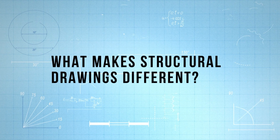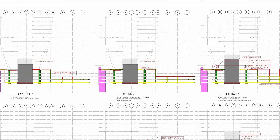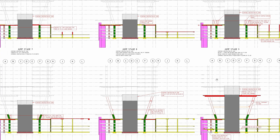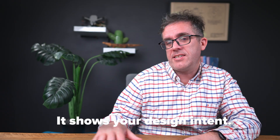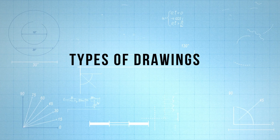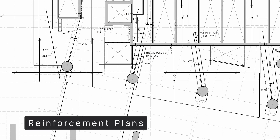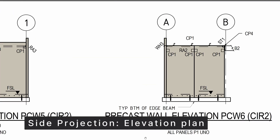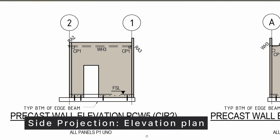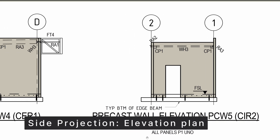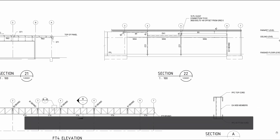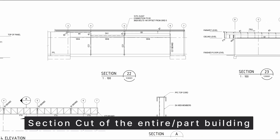So what makes structural drawings different to any other diagram? They're more than just a diagram — they show you how a building gets put together, what the final state is, sometimes documenting even temporary states, but really trying to document your design intent. There are many types: general arrangement plans, separate reinforcement plans, framing plans — all typically top-down. Then elevations which are side-on, and section cuts showing every single floor through the whole building.